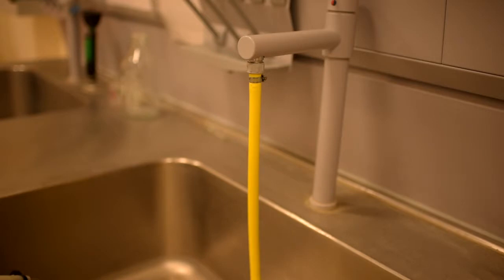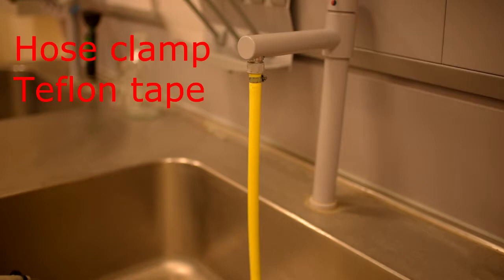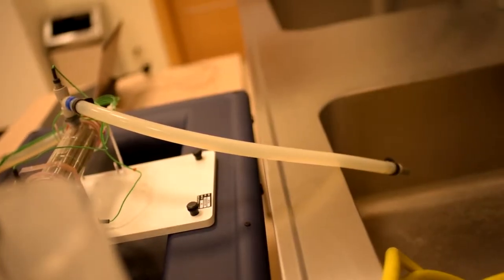For installation, you should connect the cold water hose to the water supply like this. You can use hose clamps and Teflon tape to avoid leakages. Also, you should put another cold water hose into a suitable drain like this.